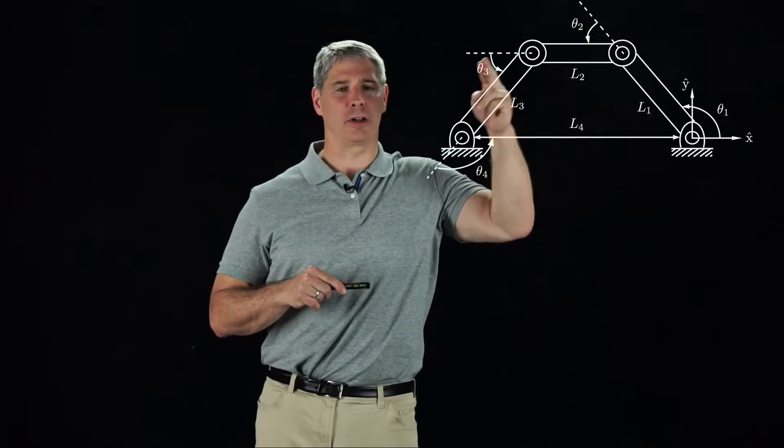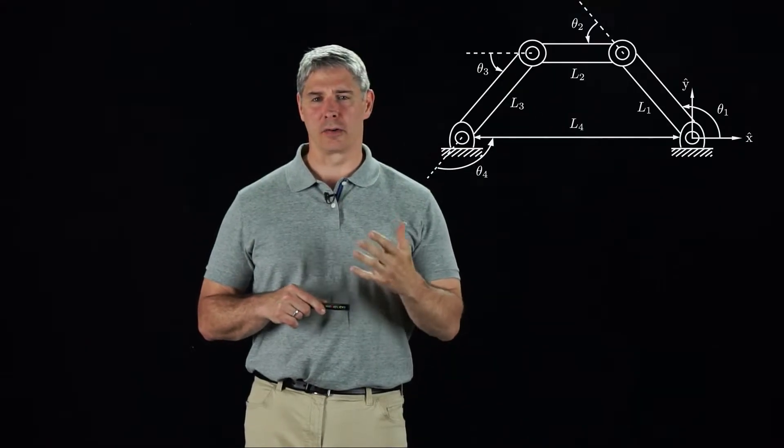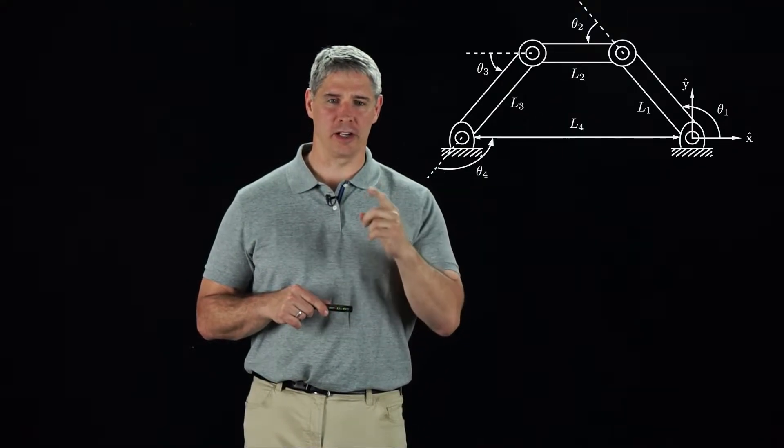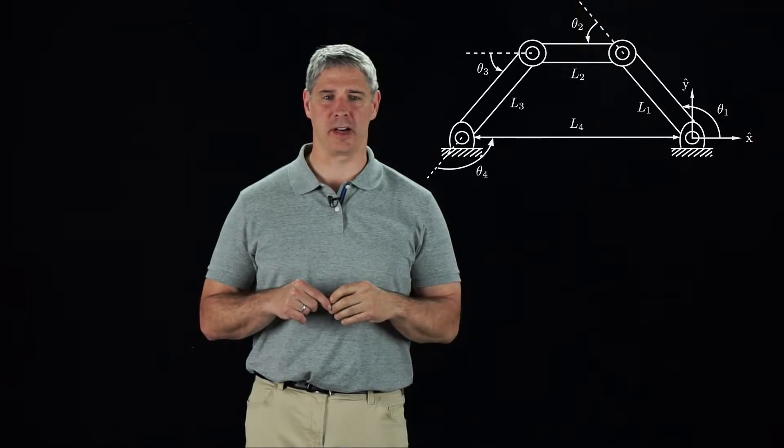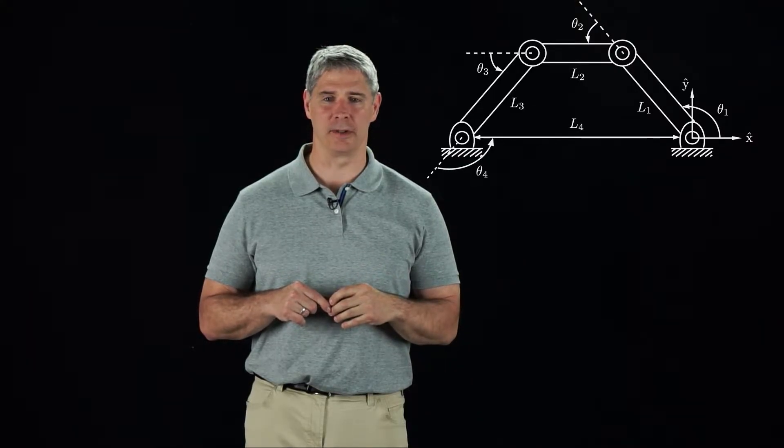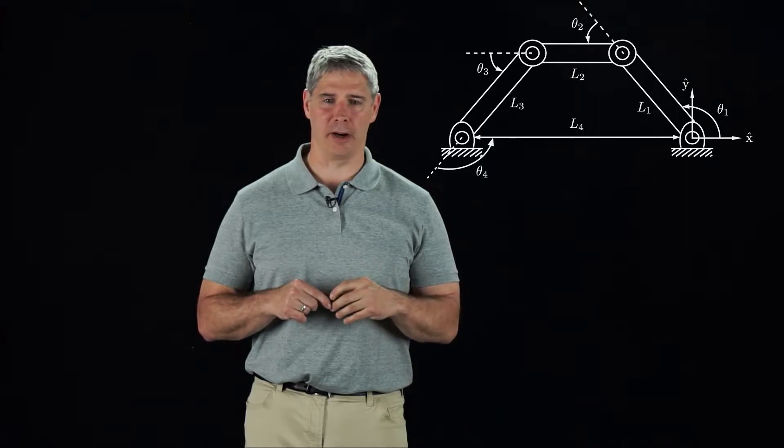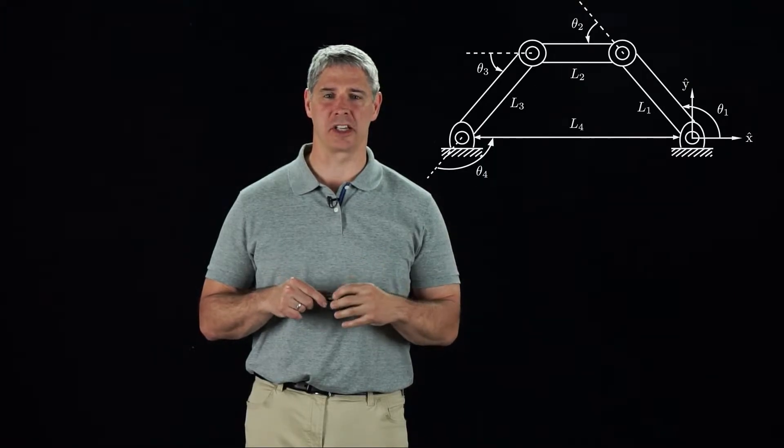Consider the four-bar closed chain shown here. Grubler's formula tells us the four-bar has one degree of freedom, so it should be possible to parametrize the C space by a single variable. This representation may be hard to derive and may have subtle singularities.